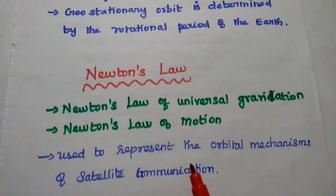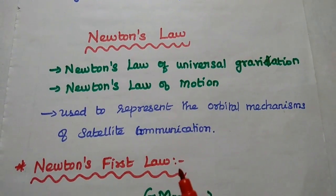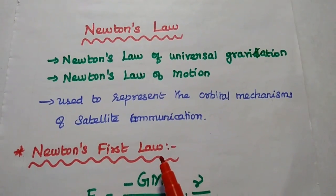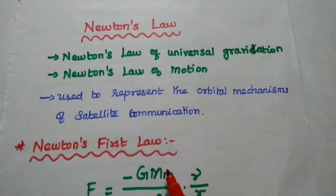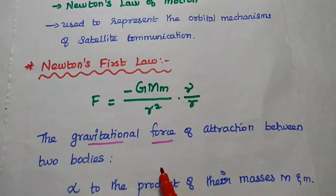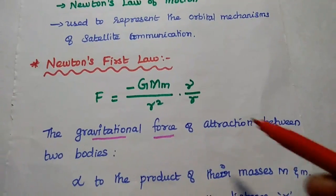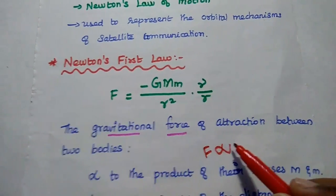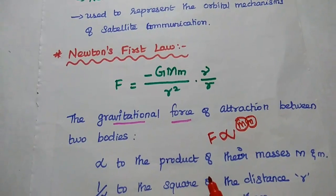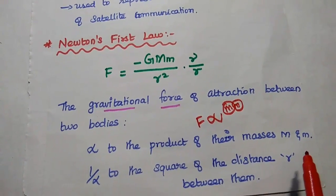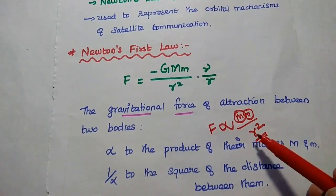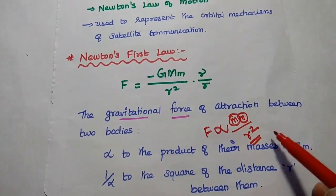Next, we are going to discuss Newton's laws. There are two Newton's laws used in satellite communication: Newton's law of universal gravitation and Newton's law of motion. These two laws are used to represent the orbital mechanisms of satellite communication. The first law — the law of universal gravitation — considers the gravitational force of attraction between two bodies. This gravitational force is directly proportional to the product of their masses, M and m, where one is for the primary body and the other is for the secondary body. And it is inversely proportional to the square of the distance between them.